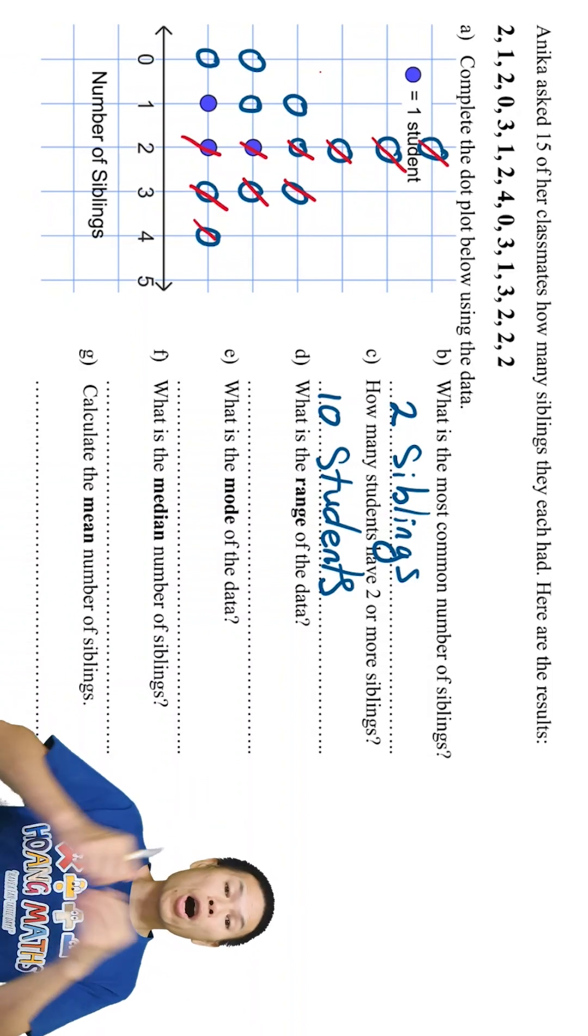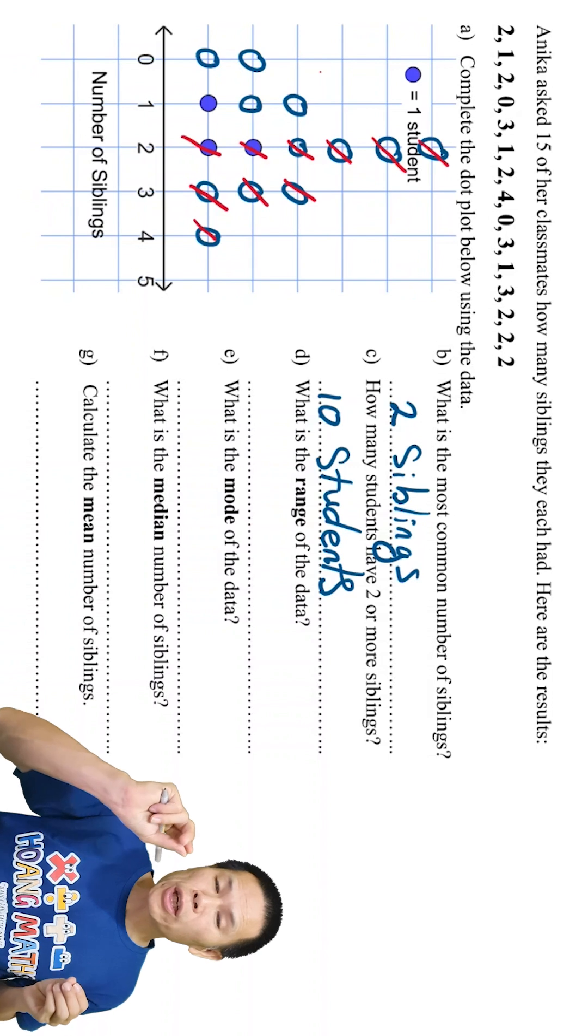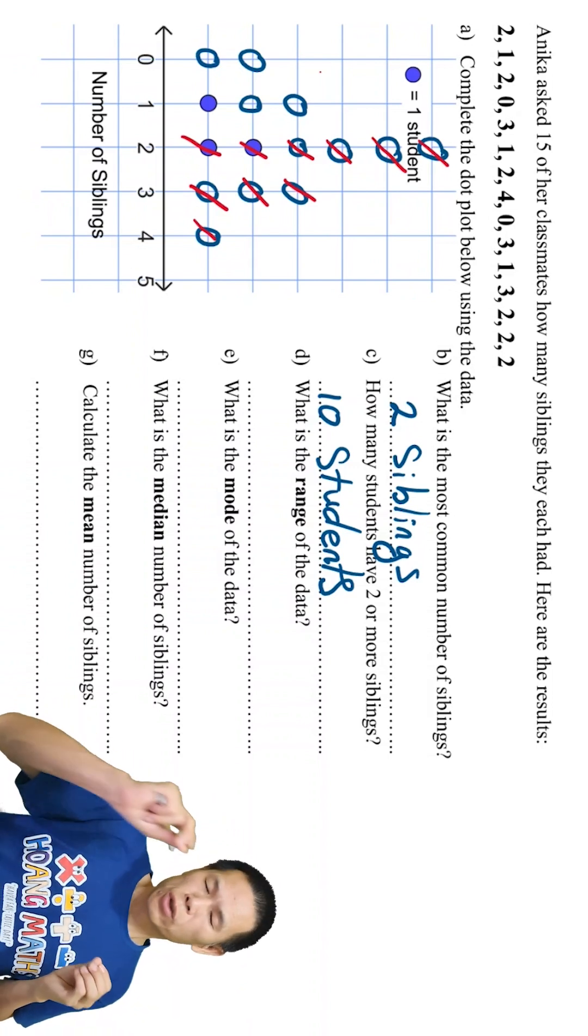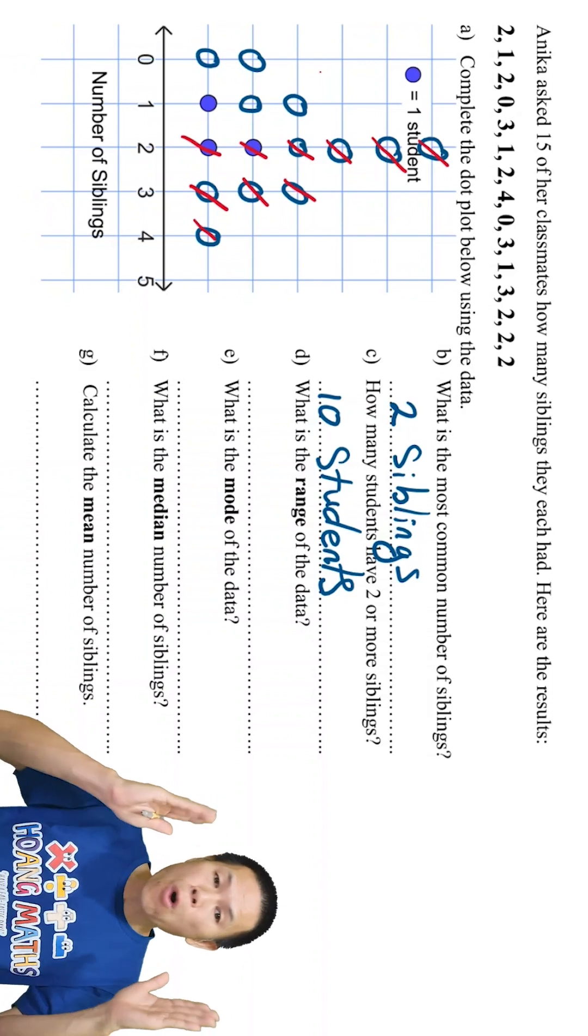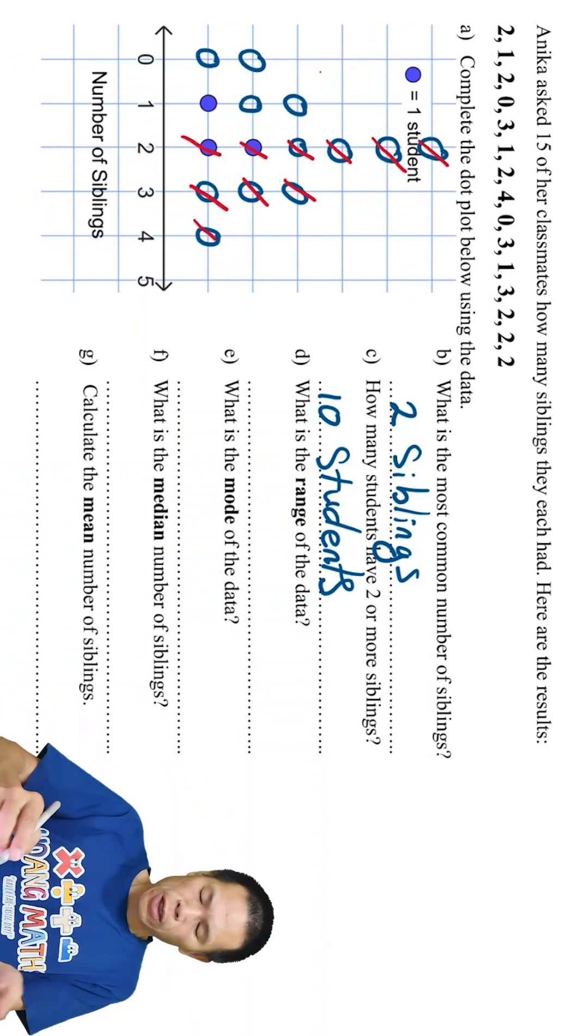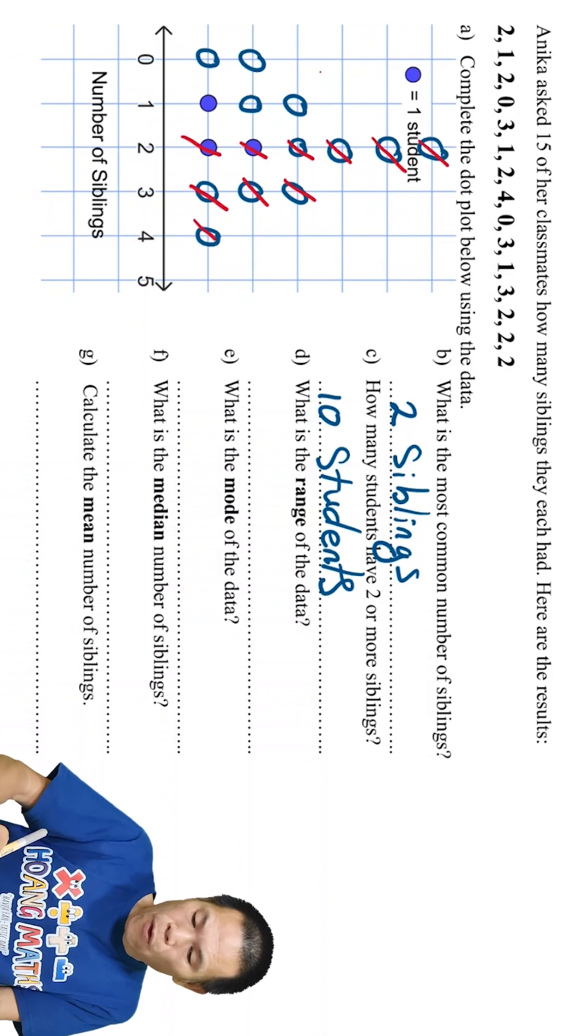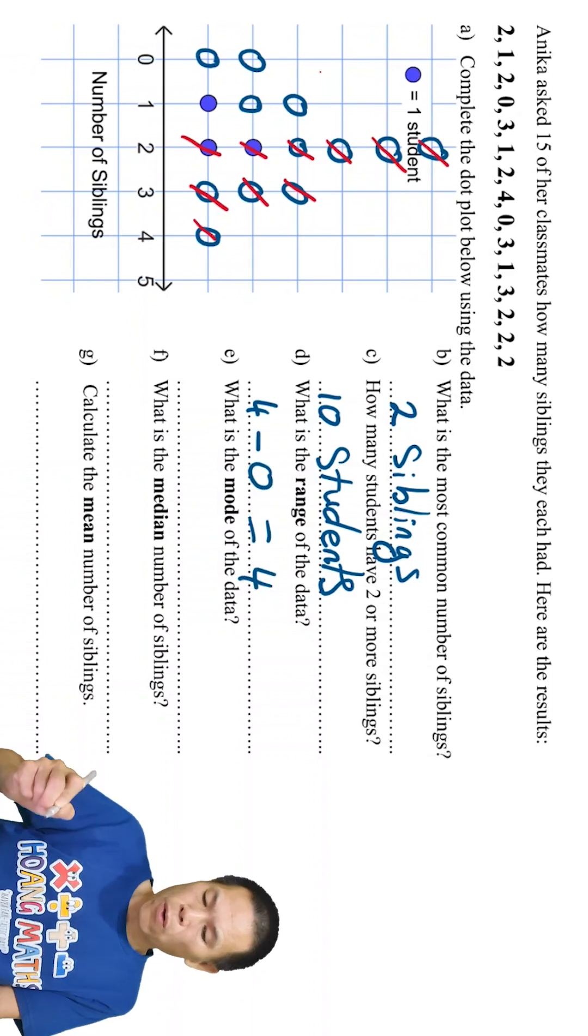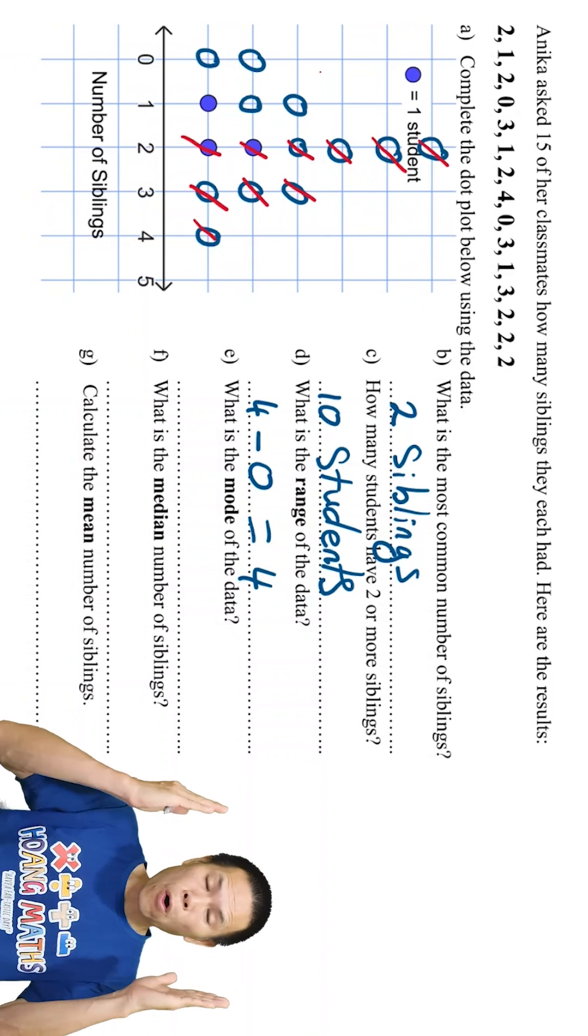Part D: what is the range of the data? So range is the highest score minus the lowest score. So the highest score in this case here is 4 siblings, and the lowest is 0 siblings. So we just go 4 minus 0, so the answer is 4.